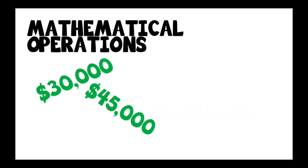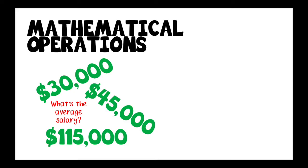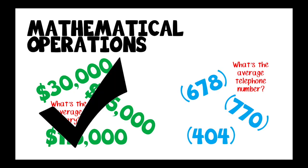Mathematical operations are only ideal for use in numerical data. Taking an average of a salary makes sense, while taking the average of telephone numbers does not.